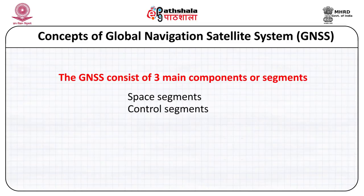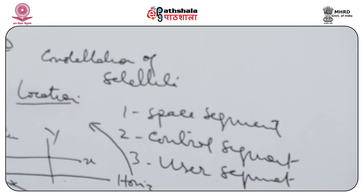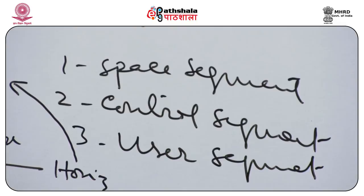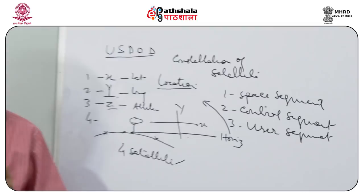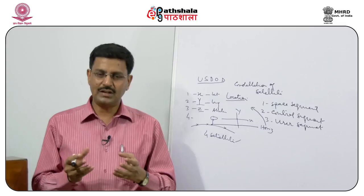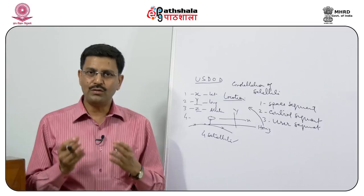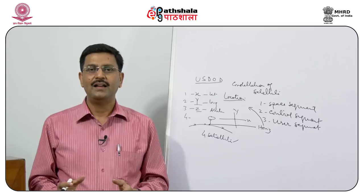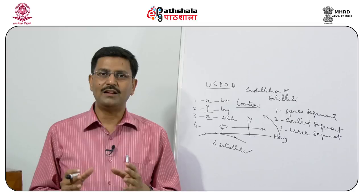The third is the user segment — that precisely means you and all those who are using the satellite data. If you want to do any project, you need to have a GPS system, that is a GPS receiver. As per your need and requirement, you go to the field and collect the data.